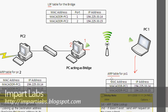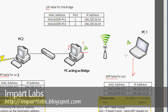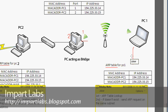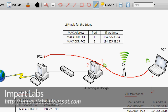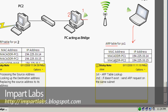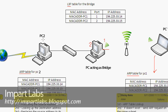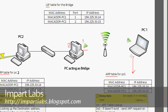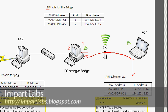Now let's see what happens when PC1 wants to send a packet all the way to PC2. First, PC1 looks up its own ARP table to find the associated MAC address for the destination IP address. PC2 has an IP address of 194.225.33.15. PC1 looks up its ARP table, finds the MAC address entry, and simply sends the packet to the bridge.